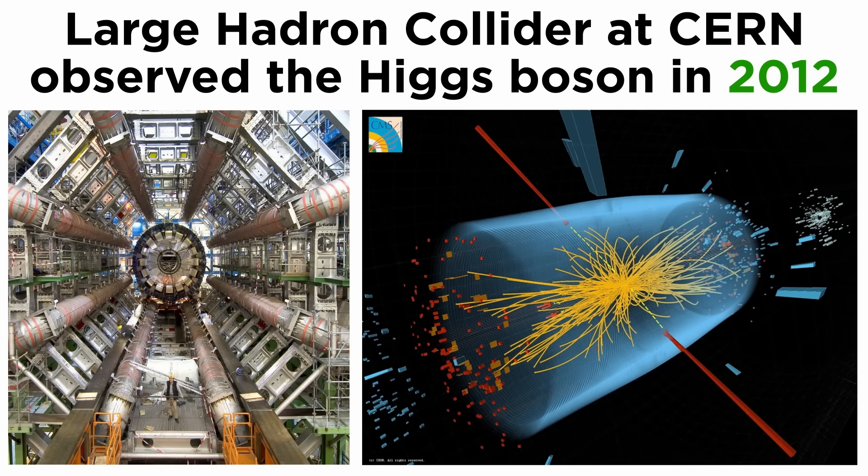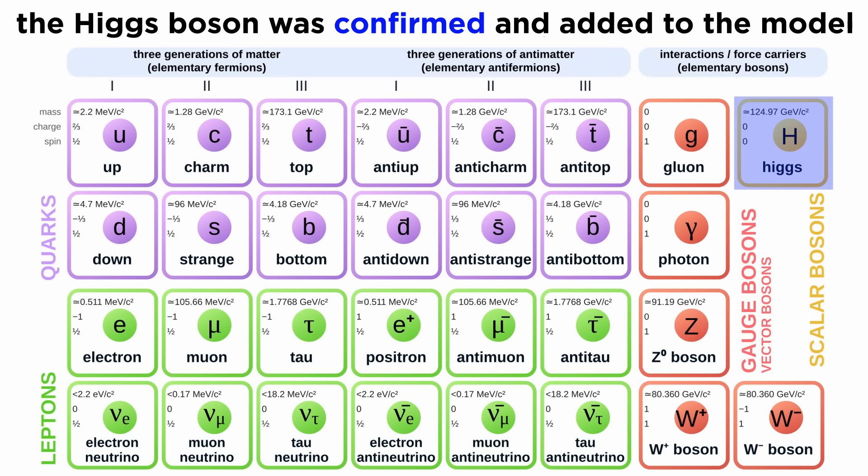This will be discussed in much more detail later, but in 2012, the Large Hadron Collider at CERN was able to produce and observe the Higgs boson using data from a large number of particle collisions. This particle's discovery confirmed that the Higgs field was real and added a key mass-generating boson to the standard model.